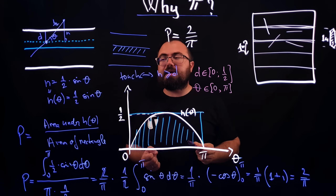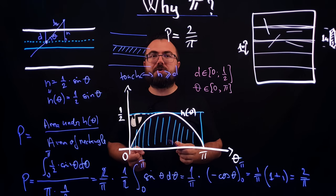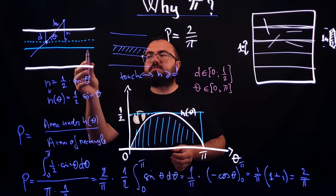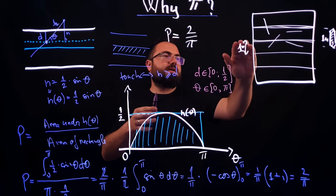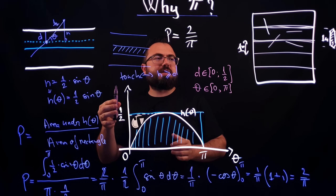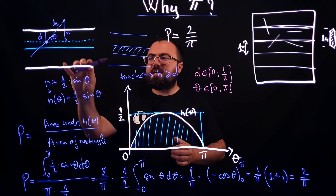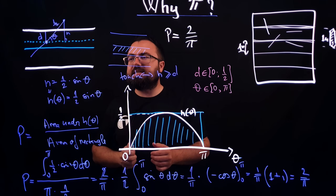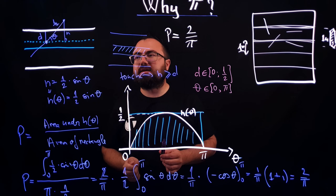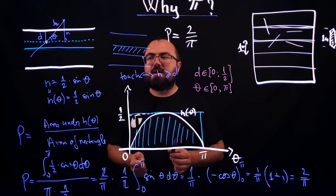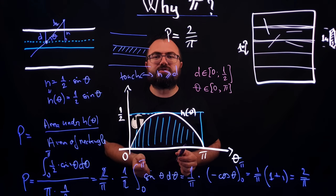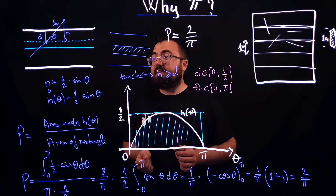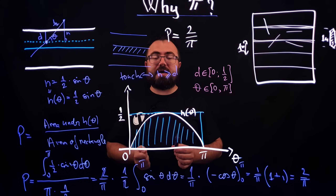A final question: why does pi appear here when you only have parallel lines and wouldn't naturally expect it? This happens because it is fundamentally a problem of rotation — there is a certain rotation of the needle that causes it to hit the line. Whenever you have rotation, there are great odds that pi just pops out. That was it for today — thank you for watching Seven Minutes Math, have a good day.